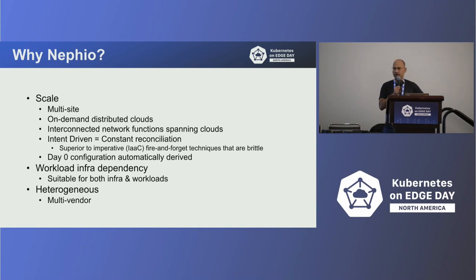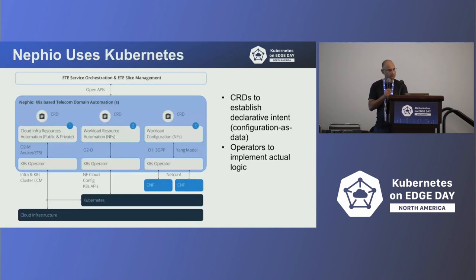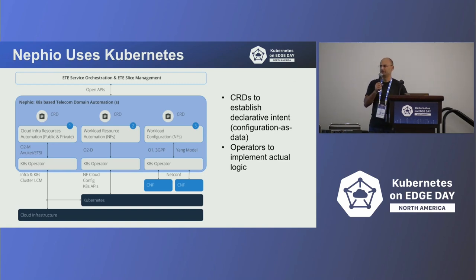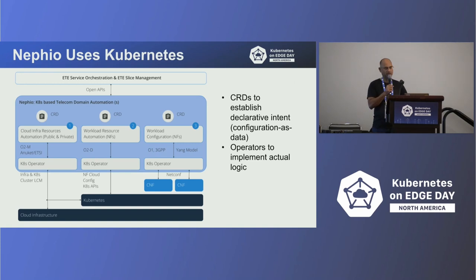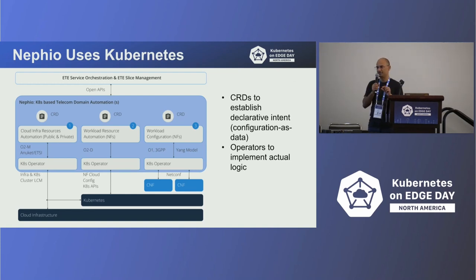The workload-infra dependency is addressed as well — Nephio is useful for both workloads and infrastructure, and it's designed to be heterogeneous. Nephio uses Kubernetes, and there are three key pillars, each using custom resources with operators underneath — a standard Kubernetes design pattern.